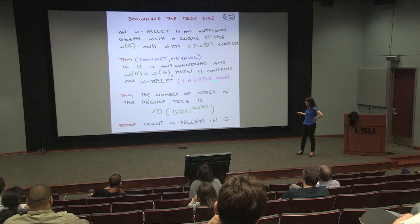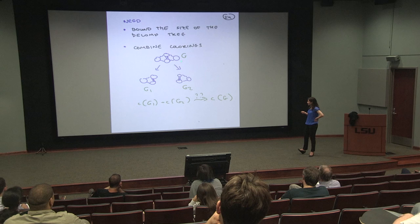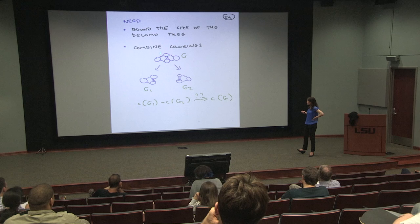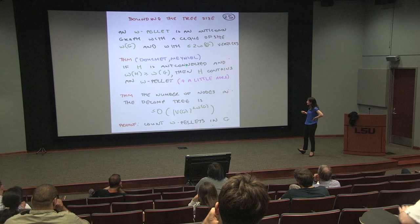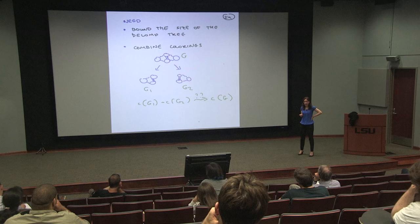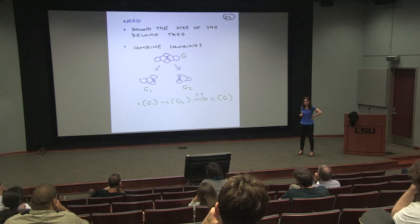To show some omega-pellet is always broken: take the anti-connected subgraph containing an omega-clique with at most 2*omega - 1 vertices given by the prior theorem. If it already meets both sides of the decomposition, it's broken. Otherwise, it's contained in one half — but then add one vertex from the other half, which makes it anti-connected with at most 2*omega vertices and now meeting both sides. So it's broken. The omega-pellet count bounds the decomposition tree size.